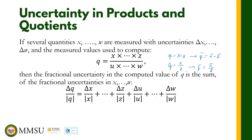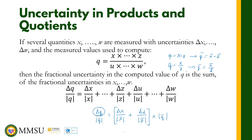Our concern here is the uncertainty in Q, which uses fractional uncertainty. For two variables, delta Q over the absolute value of Q equals delta X over the mean value of X plus delta Z over the mean value of Z. To find delta Q, compute this fractional sum and then multiply by the absolute value of the mean value of Q.